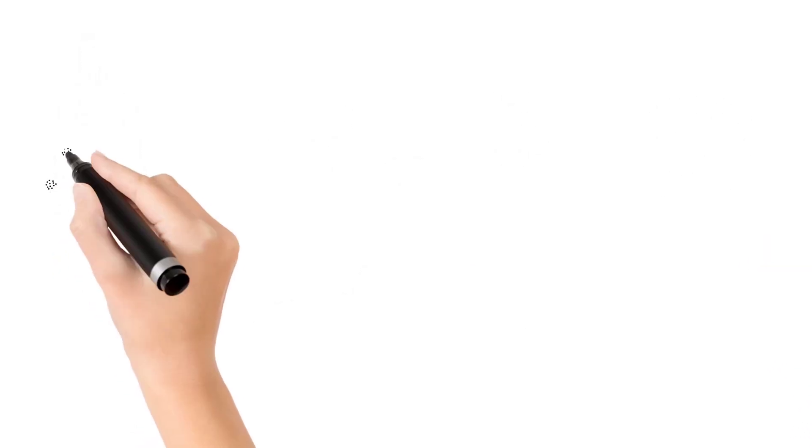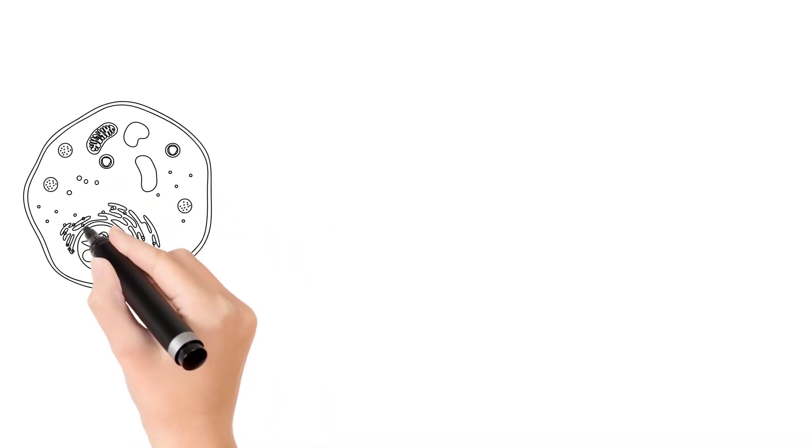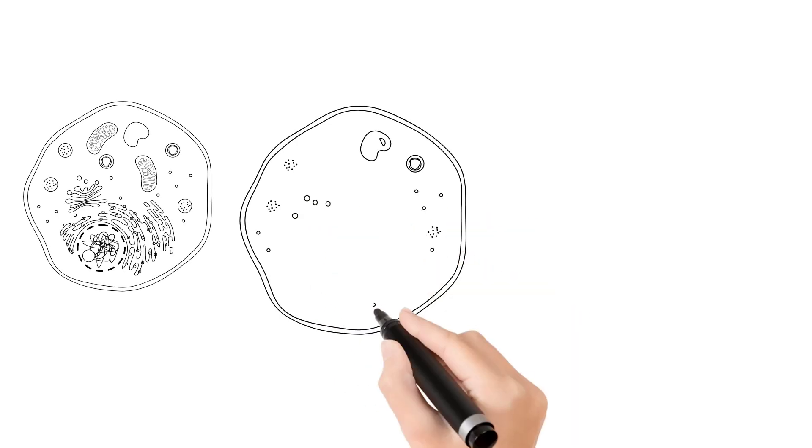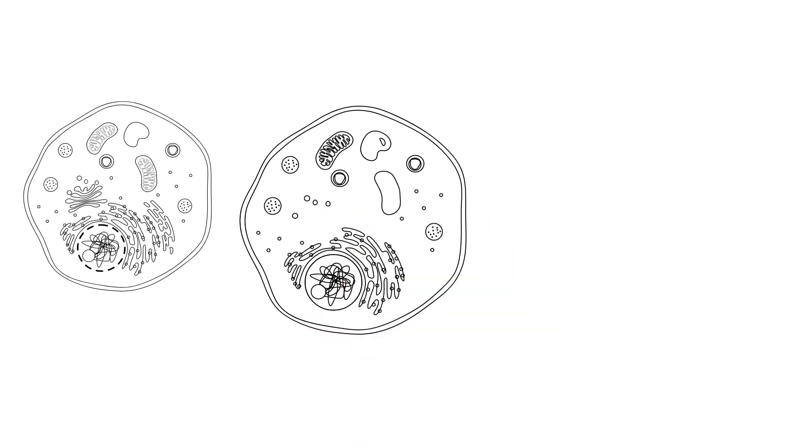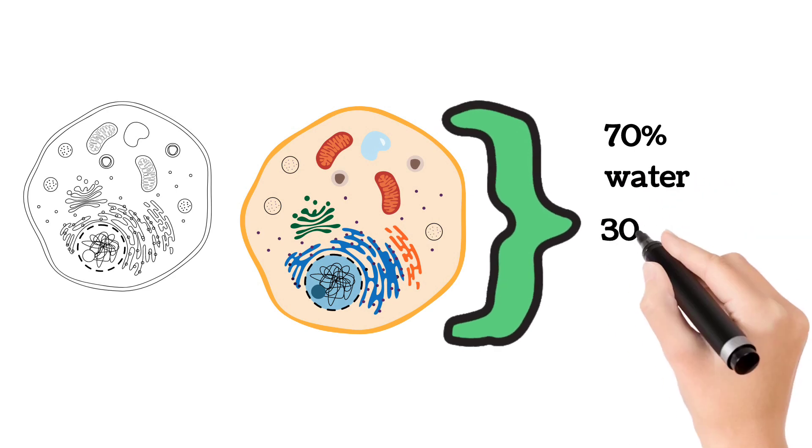Now, since the cell is the basic unit which forms our body, we need to know the composition of a cell. It will come to your surprise that almost every cell in our body is composed of 70 percent of water.